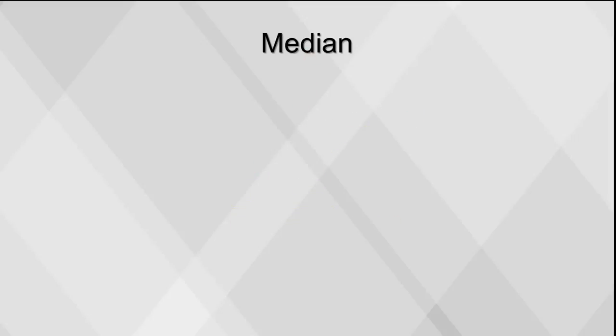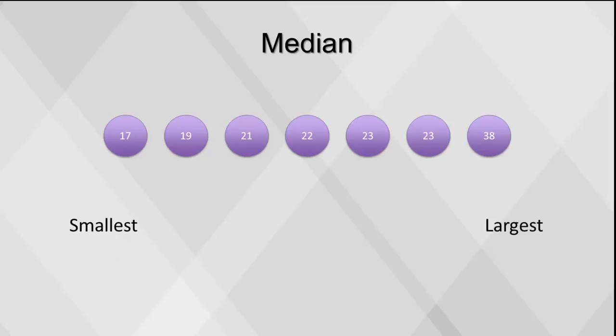The median is the middle value of the data. In this example, we have seven different ages. To find the median, we first order them from smallest to largest, and then locate the value in the center.